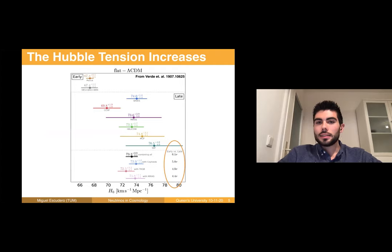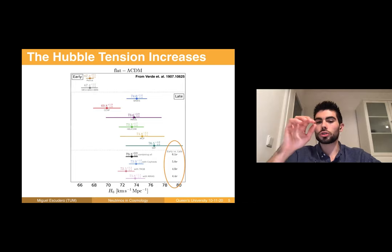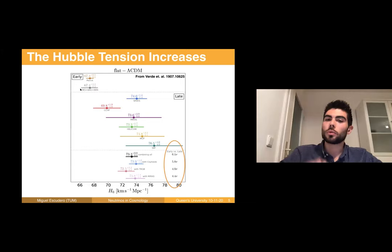Finally, what has happened in the past year is that the Hubble tension has increased. The Hubble tension is the tension between measurements of the Hubble constant as measured locally using different probes — in particular with Type Ia supernovae by Riess and collaborators — and the value one would infer using CMB observations within the framework of Lambda CDM. At present the tension is between 4 to 6 sigma depending on which measurements you combine.